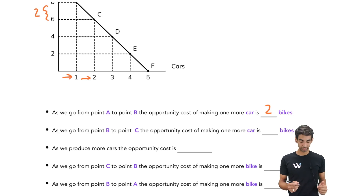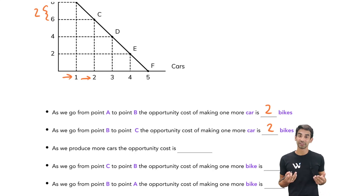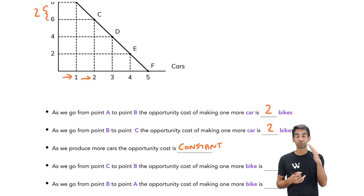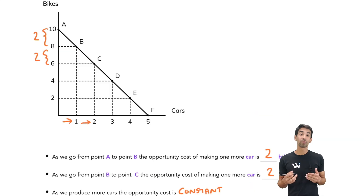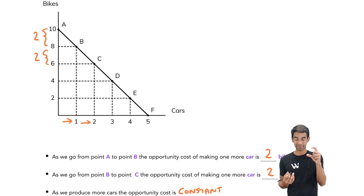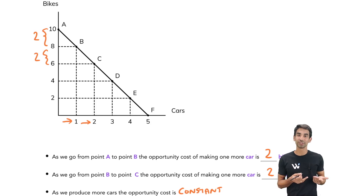This means that the opportunity cost is staying constant, because the slope of a straight line does not change — it stays the same. So the slope is the opportunity cost. From math, the slope of any line is rise over run, or (y2 − y1) / (x2 − x1), or change in y over change in x. Going from point A to B, the change in y is 2 (from 10 to 8) and the change in x in cars is 1. So 2 over 1 gives us 2 — that's the opportunity cost.